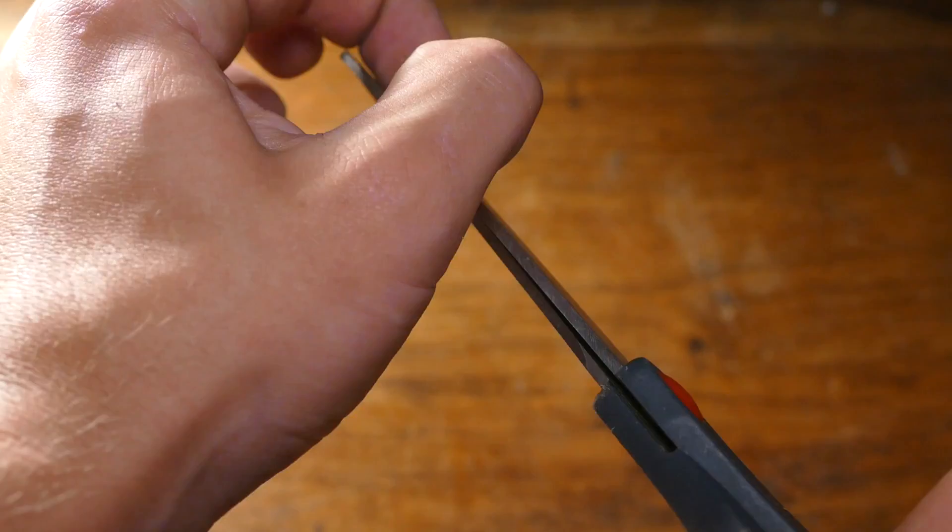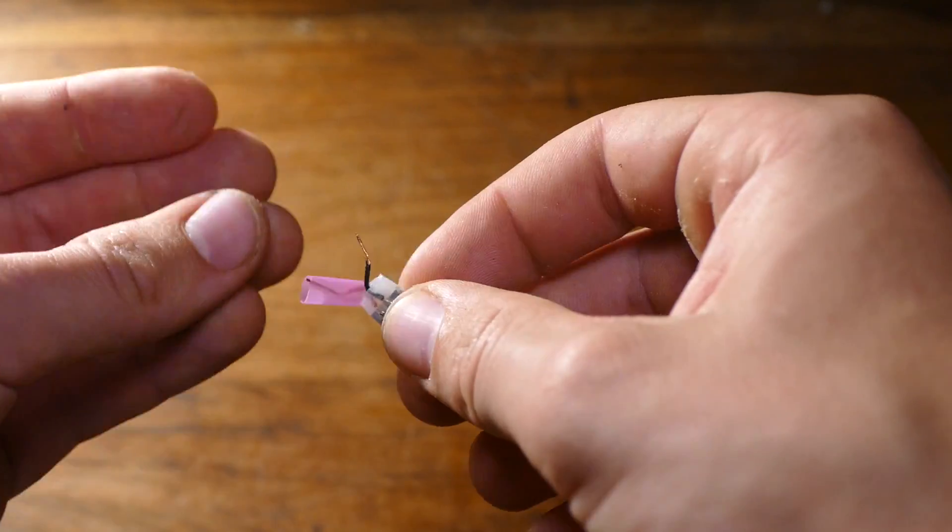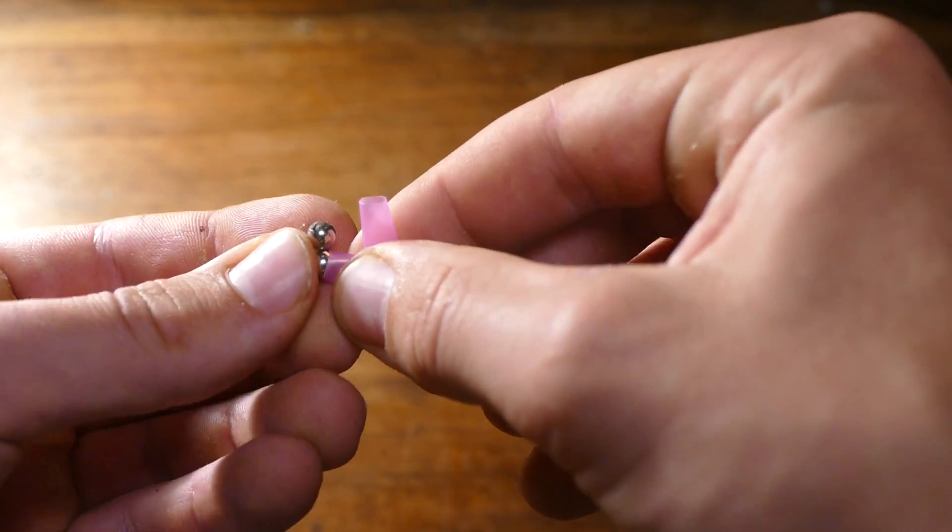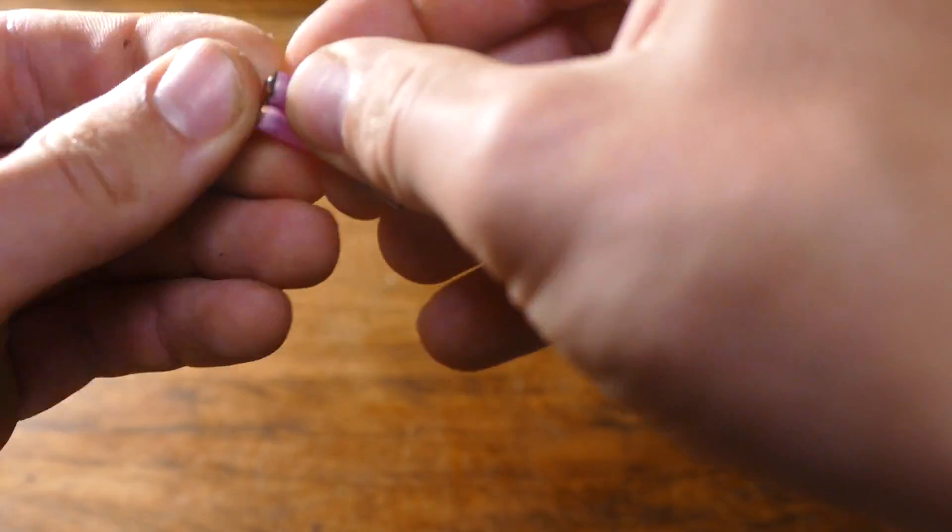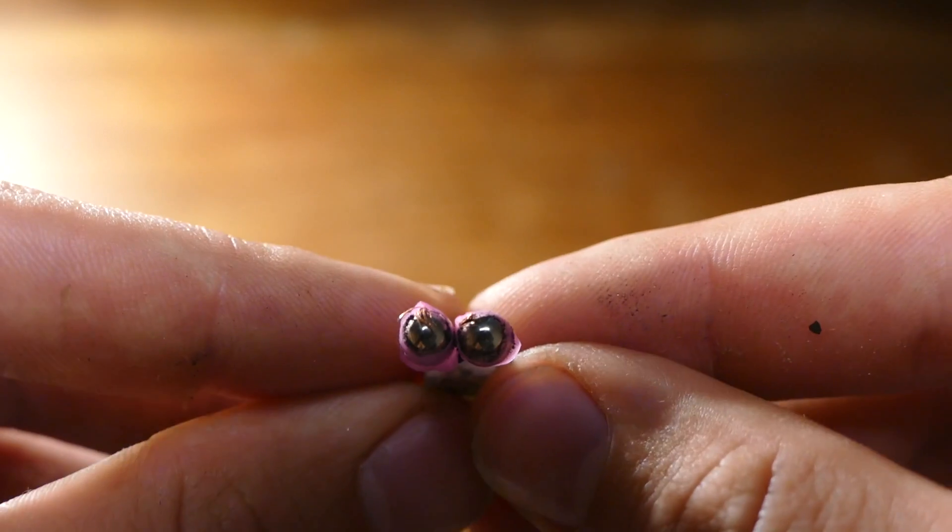Then grab a straw and cut off two pieces as long as the wires that are coming out of your power end. Then slip them onto the wires. Now with the magnets still attached to each other slip the magnets down inside the straw with the wires wedged into the sides like this.